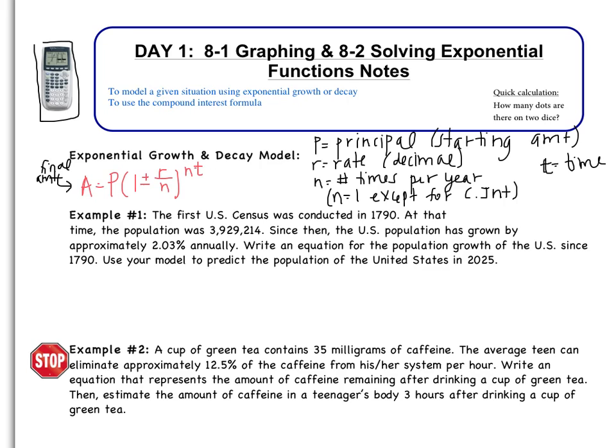Last thing that you're going to notice about this equation is we have plus and minus. And you need to choose which one is appropriate for a given situation. If the situation is describing exponential growth, you're going to use addition. If the situation is describing decay, you're going to use subtraction. So you just need to determine, is my population growing? Am I describing a situation that something's growing or is it decreasing?